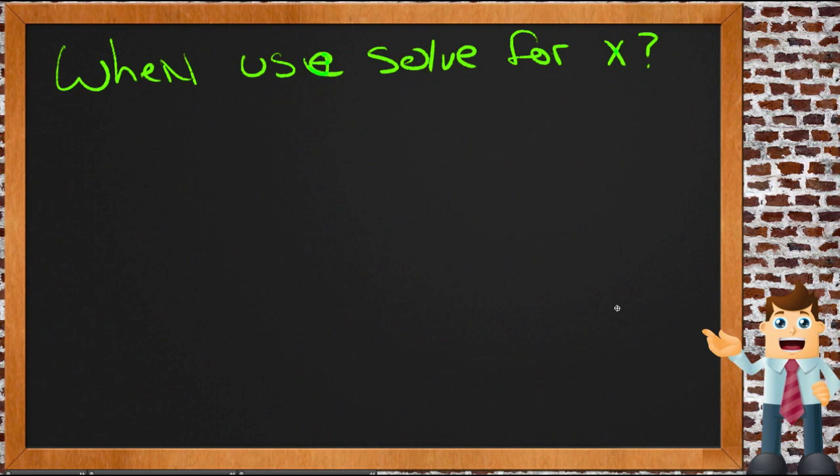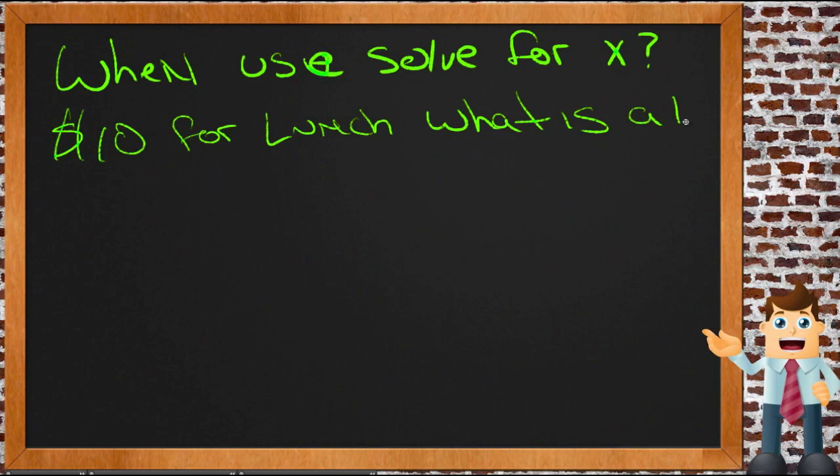When you're in a restaurant and you've just had a meal and you're going to calculate a tip, say you've spent $10 on your lunch. What is a 15% tip? Yeah, that's solving for x.